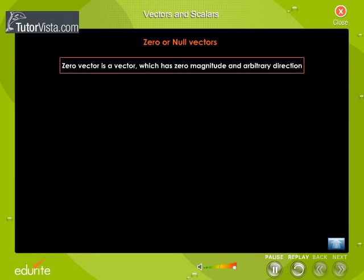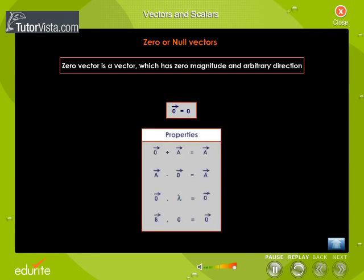Zero or Null Vectors: Zero vector is a vector which has zero magnitude and arbitrary direction. It is represented as shown. Here are some of the properties of this vector. When a zero vector is added to any vector A, we get the same vector A. When a zero vector is subtracted from vector A, we get the same vector A. When a zero vector is multiplied by a non-zero scalar, we get zero vector. When a vector B is multiplied by zero vector, we get a zero vector.